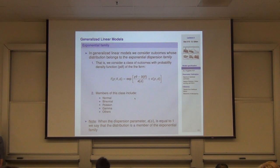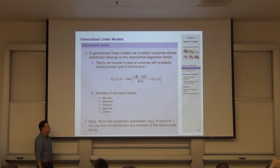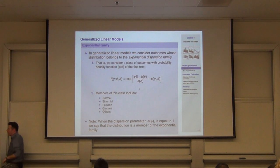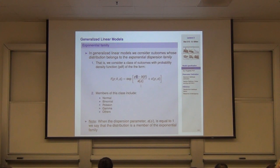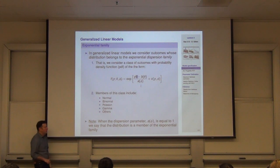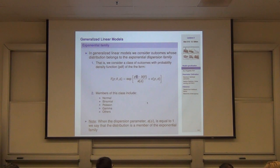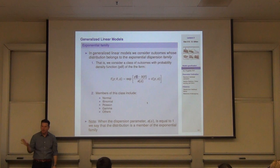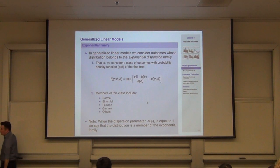For the Poisson distribution, the canonical link is the log. The canonical parameter theta is defined from the exponential family representation. We also talk about exponential dispersion families, which include A(phi) sitting in the denominator. If A(phi) equals one, then the distribution is a member of the regular exponential family.